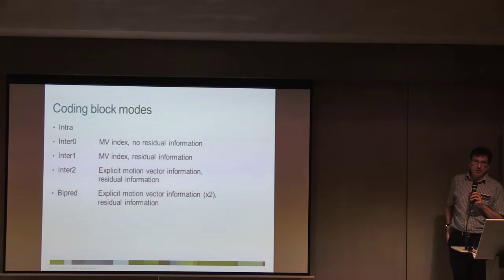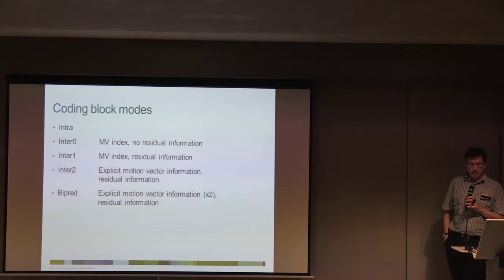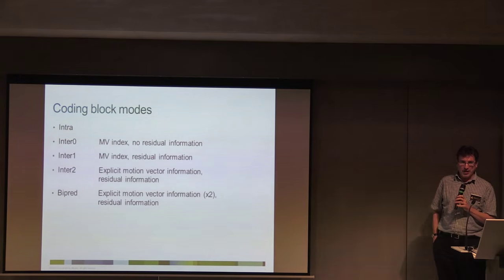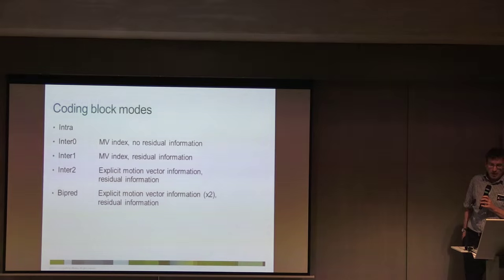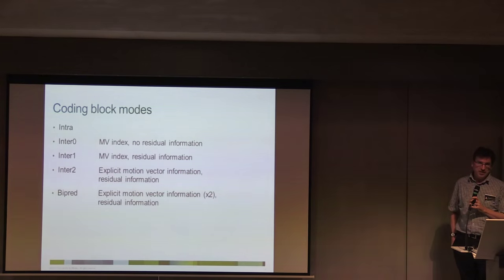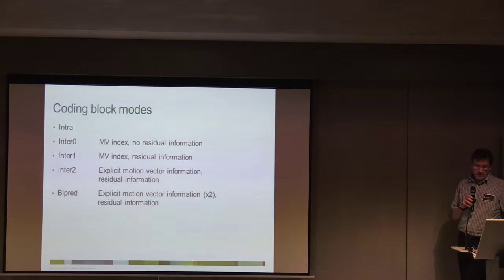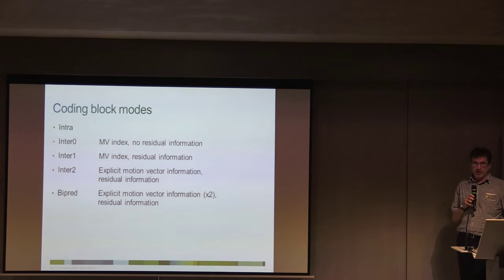We use some terminology here. We have intra; inter 0, which some of you might recognise as a disguised skip, with MV index and no residual information; inter 1, which is essentially merge, where you copy the motion information from a neighbouring block and can have two skip candidates. You send residuals in the case of merge or inter 1. And then the rest is standard inter prediction, where you explicitly code a motion vector and a residual.